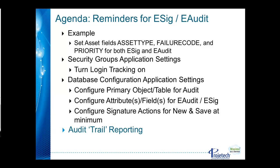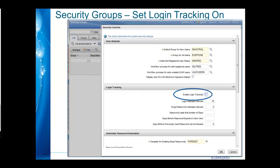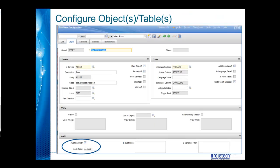Last, we'll take a look at audit trail reporting and the common tables that are involved. In the security groups application we set the login tracking features on. Then we move into the object, identify the particular table, and enable auditing. That gives us an A-underscore-table-name as the default, though at this point you can change what that name will actually be.